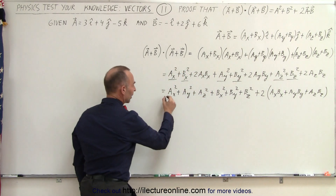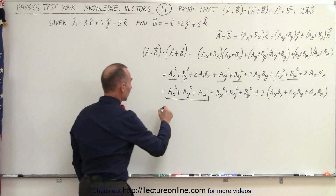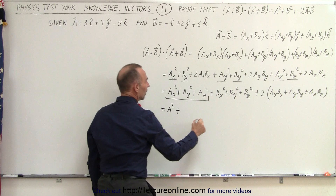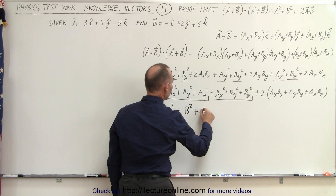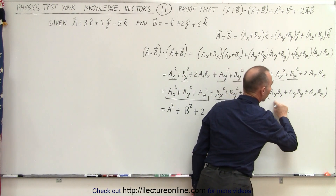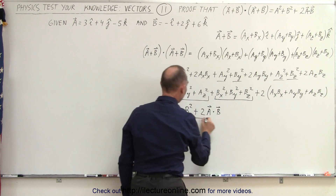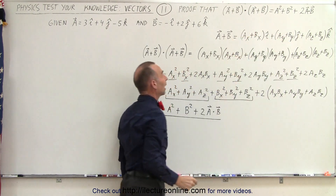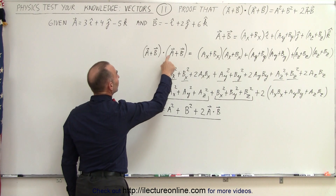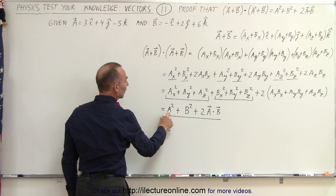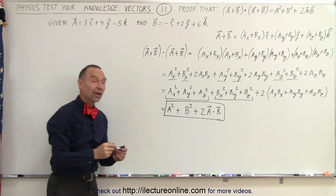Now when I take a look at this, I realize that this here is equal to the magnitude of the a vector squared, so this can be written as |a| squared. Plus this here, which is equal to the magnitude of b squared, so this is |b| squared. And plus two times — notice that this is the definition of the dot product of a and b — so this would be two times a dot b. That's exactly what we wanted to find, so the sum (a + b) dotted with (a + b) is indeed the magnitude of a squared plus the magnitude of b squared plus twice the dot product of a and b. That is how we prove that.